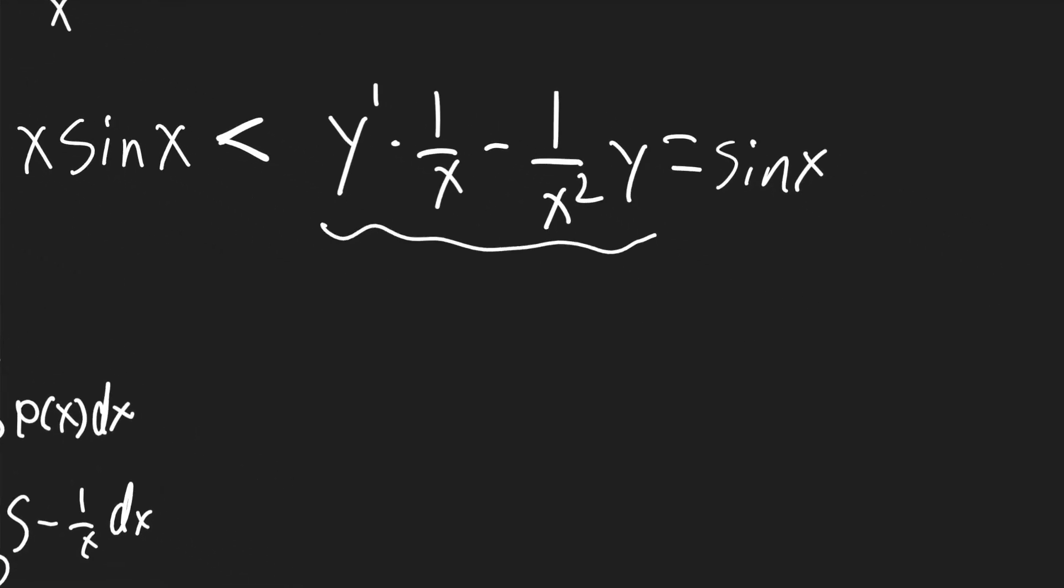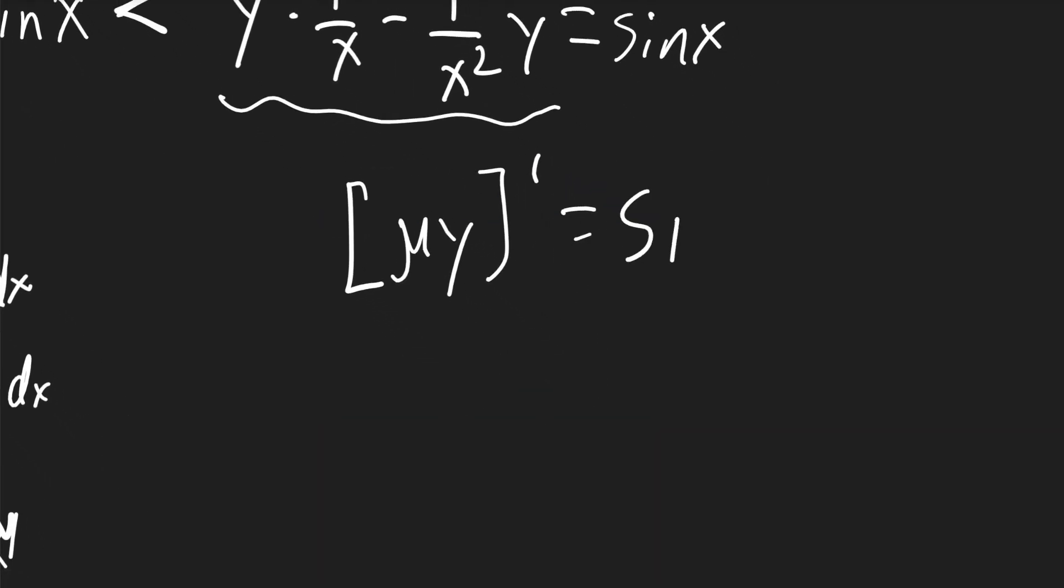Now on the left side, that's just the power rule of mu times y when you take its derivative, and that'll be equal to sine of x. Now mu we said was 1 over x. It's going to be multiplied by y, and we'll take its derivative. That'll be equal to sine of x.